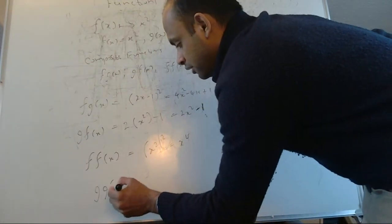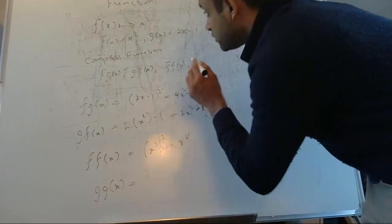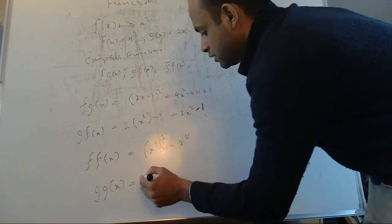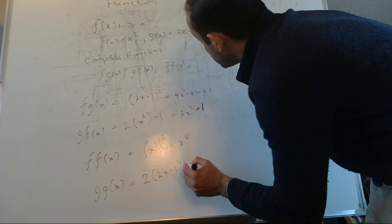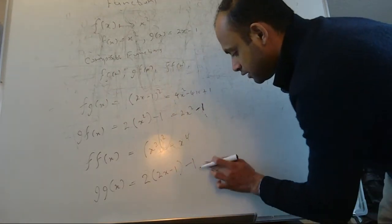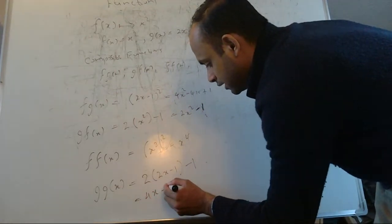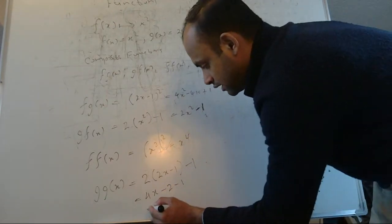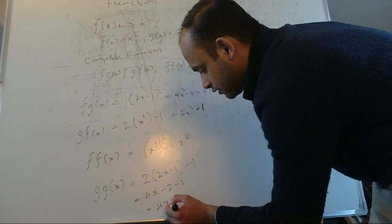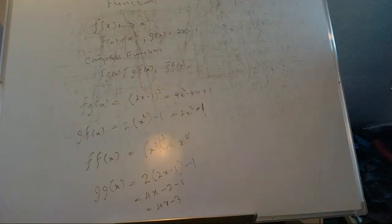And g of g of x means g goes into itself, so it's 2(2x minus 1) minus 1, which equals 4x minus 2 minus 1, giving 4x minus 3. Those are composite functions.